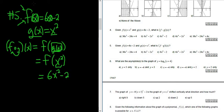Again, f of x is 6x minus 2, so f of x squared. All you do is replace all of the x's with x squareds. So you would get 6x squared minus 2.